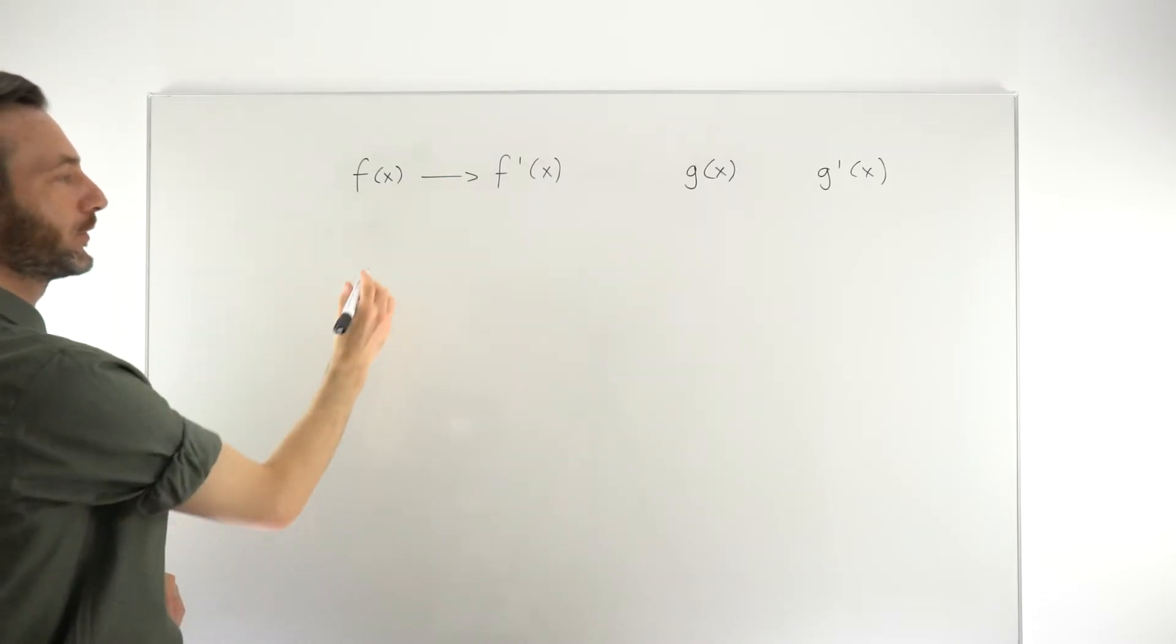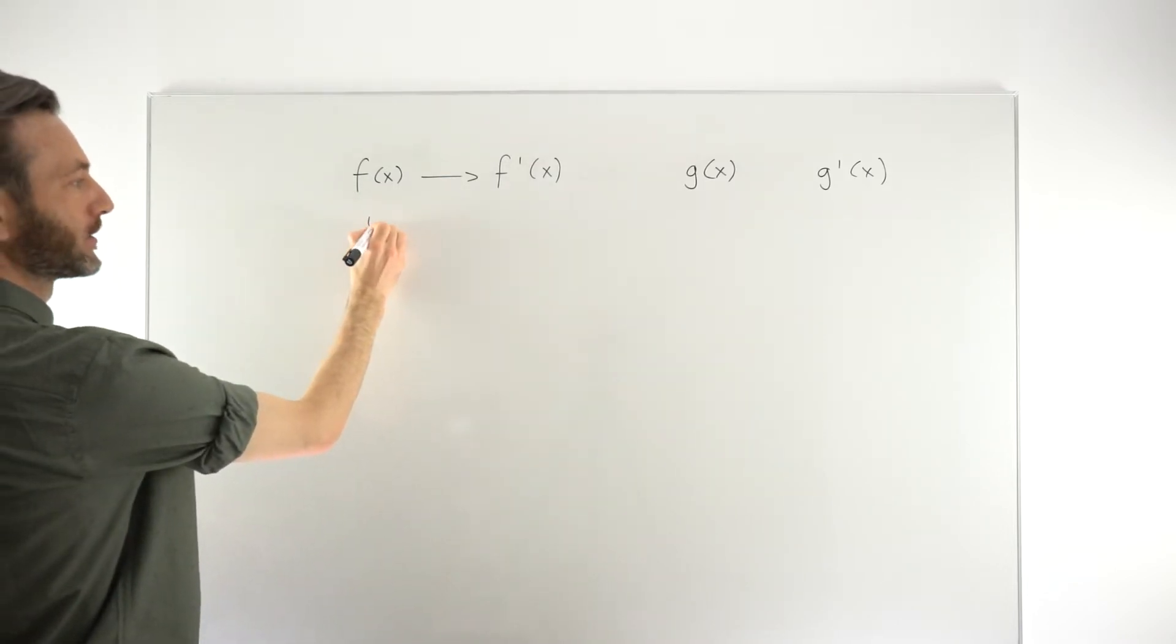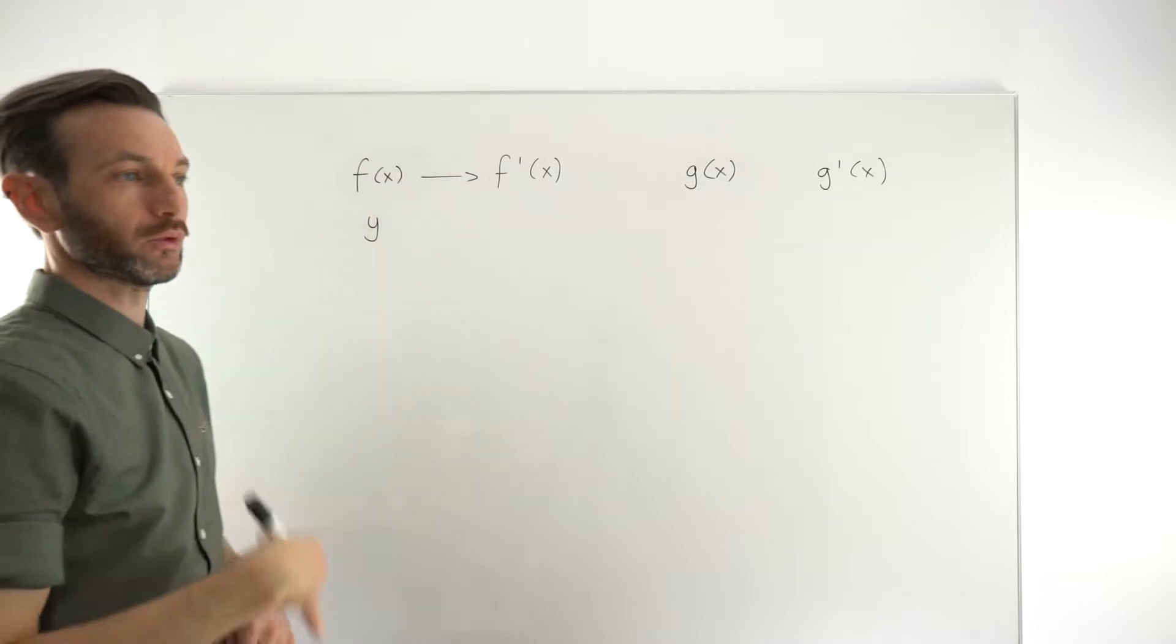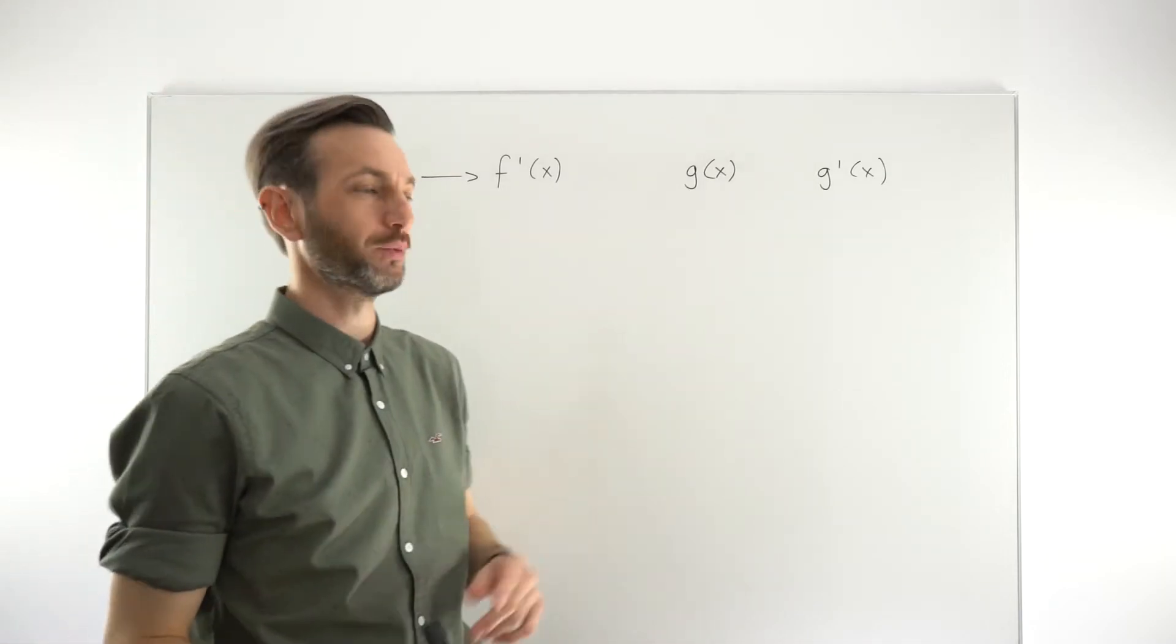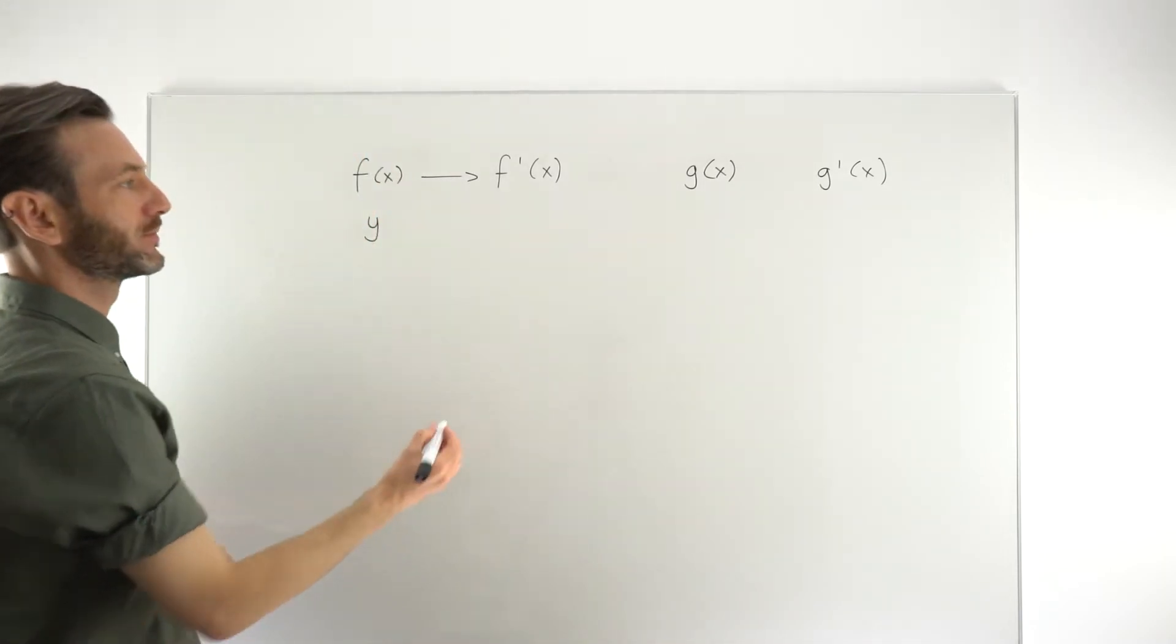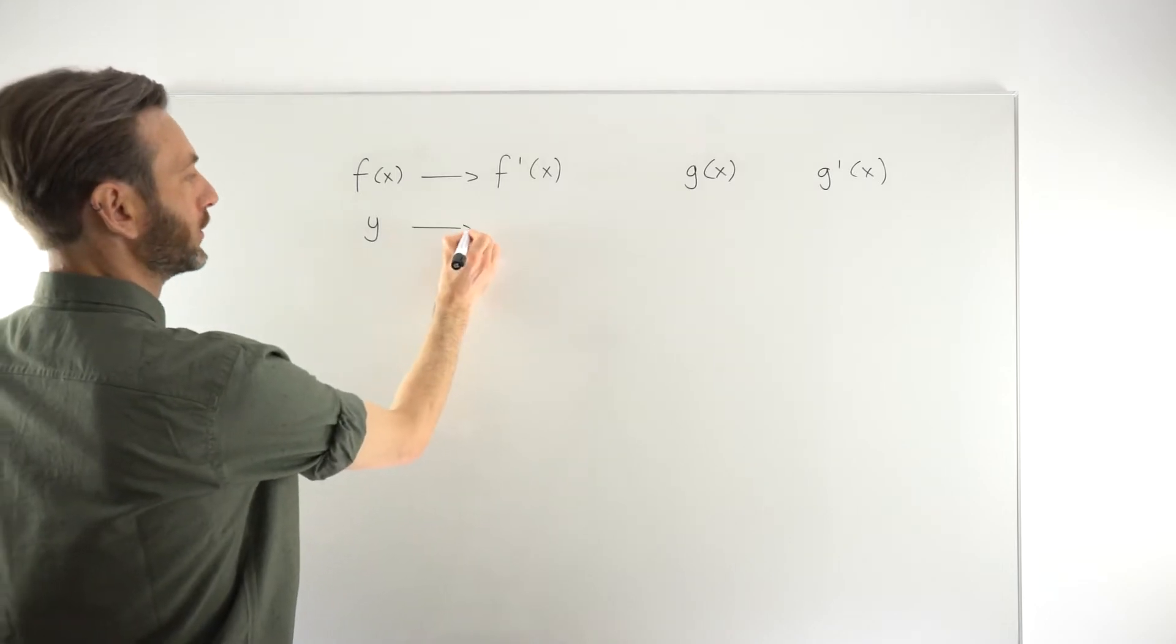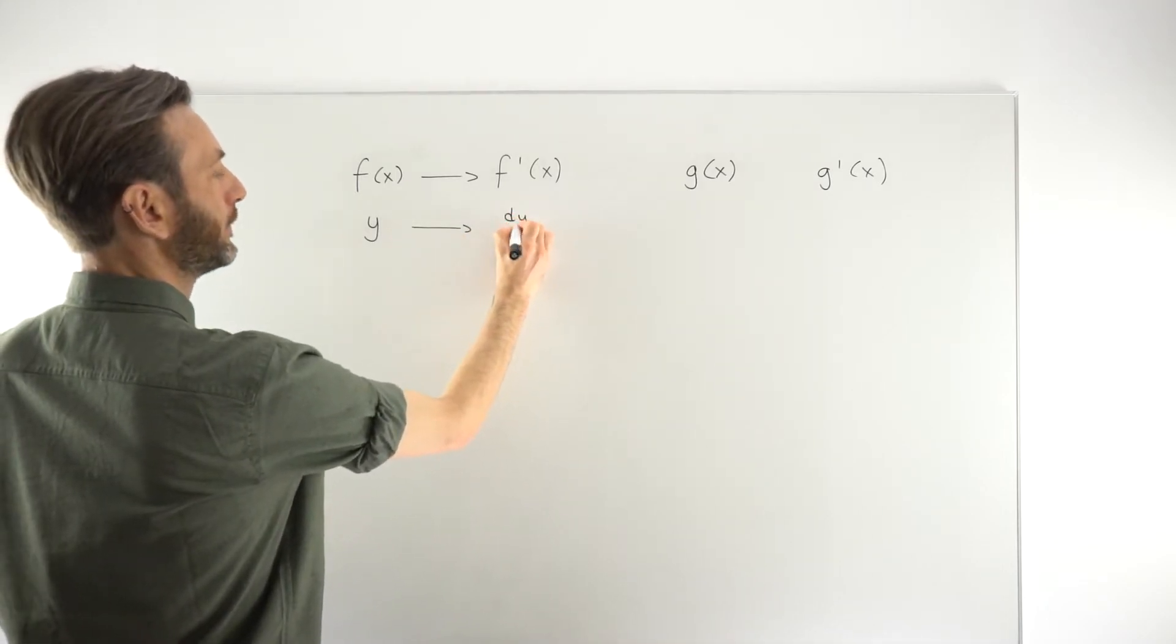If, however, the original function is represented as, say, y equals 2x plus 3, or y equals x squared, or something like this, then you'll use the notation dy dx.